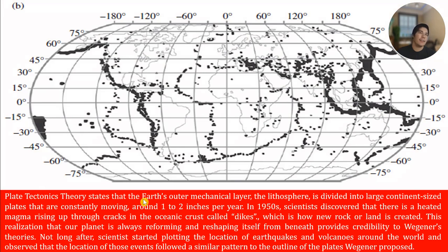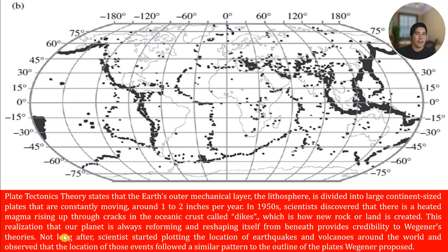Plate tectonic theory states that the earth's outer mechanical layer, the lithosphere, is divided into large continent-sized plates that are constantly moving at around 1 to 2 inches per year. In the 1950s, scientists discovered that heated magma rises up through the rocks in the ocean crust, called dykes, which is how new rock or land is created. Scientists then started plotting the locations of earthquakes and volcanoes around the world and observed that these locations followed a similar pattern to the outlines of the proposed plates.